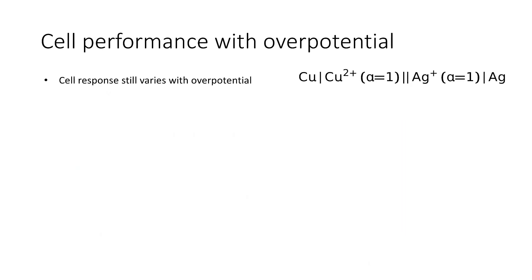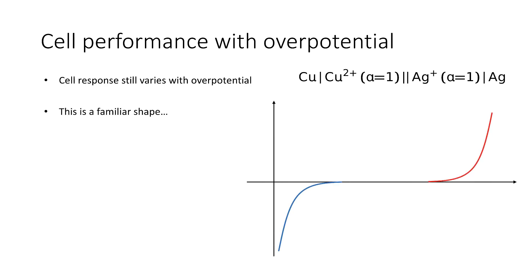We want to look at the cell performance and how it varies with the overpotential again. Looking at the current-voltage curve, this is a familiar shape — we've already seen this in terms of Butler-Volmer kinetics — but now we're looking at a much greater potential range, the potential under which we would expect to do real electrochemistry.